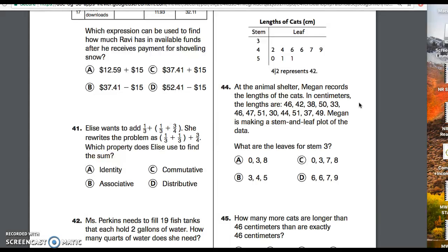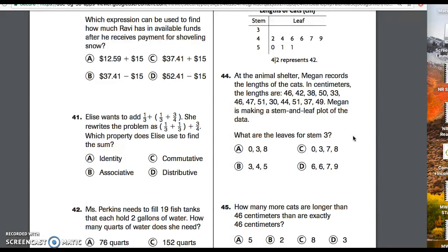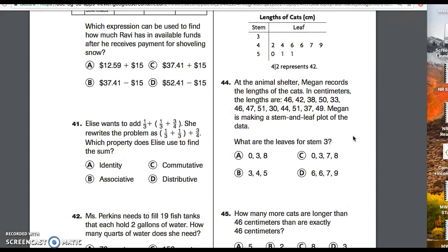The lengths are 46, 42, 38, 50, 33, 46, 47, 51, 30, 44, 51, 37, 49. Megan is making a stem and leaf plot of the data. What are the leaves for stem 3?